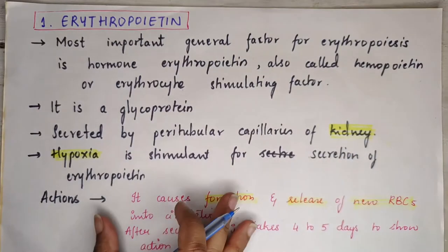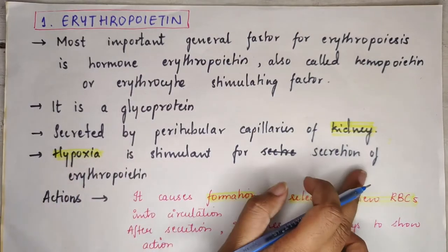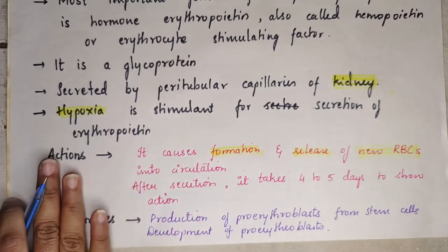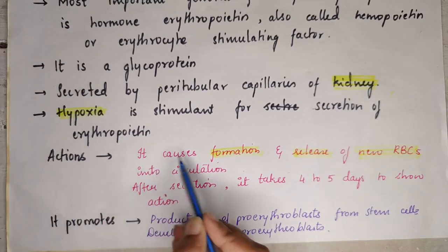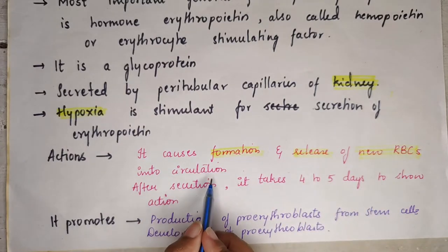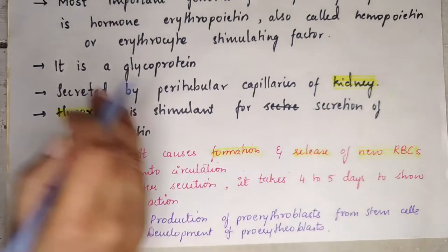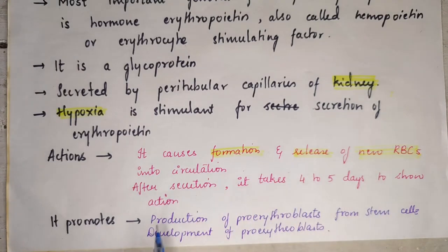Hypoxia is one of the main stimulants for the secretion of erythropoietin. Its primary action is causing the formation and release of new RBCs into circulation. After secretion, it takes four to five days to show its action.